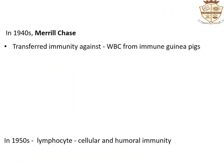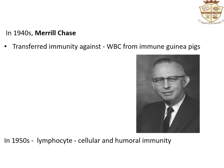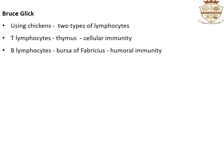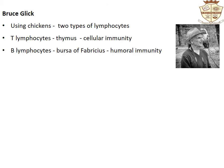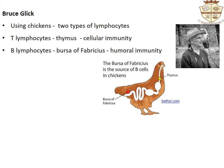In the 1940s, Merrill Chase transferred immunity against tuberculosis by transferring white blood cells from immune guinea pigs. In the 1950s, with the emergence of cell culture techniques, lymphocytes were identified as the cells responsible for both cellular and humoral immunity. Bruce Glick's studies using chickens indicated that there are two types of lymphocytes: T-lymphocytes from the thymus mediating cellular immunity, and B-lymphocytes from the bursa of Fabricius in birds mediating humoral immunity. It was understood that the two systems work in an intertwined manner for the immune response.